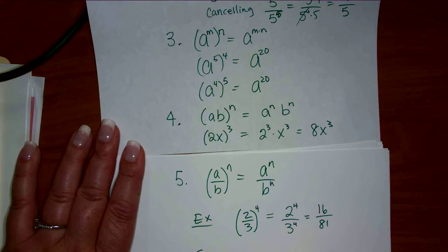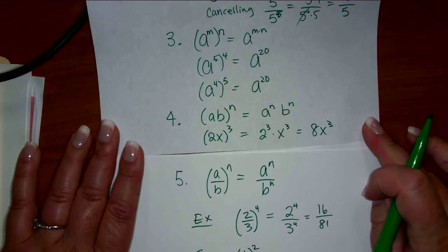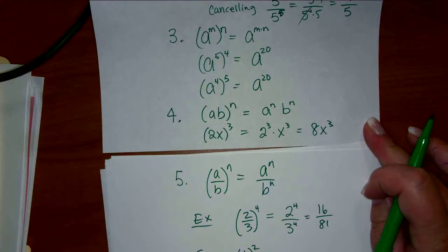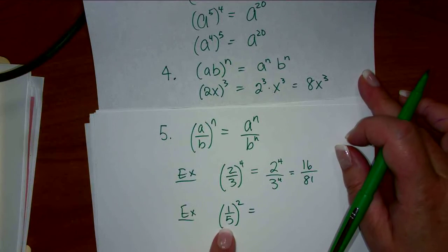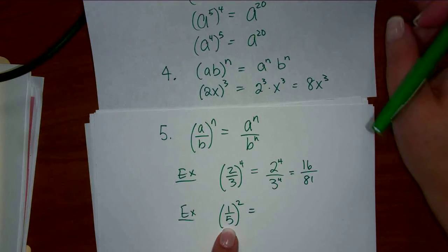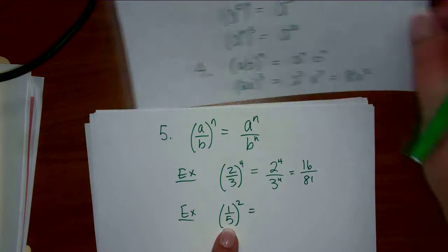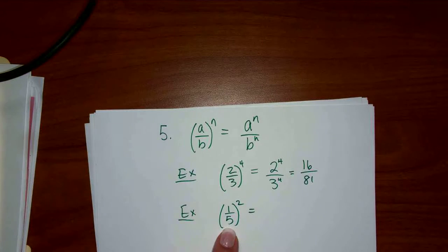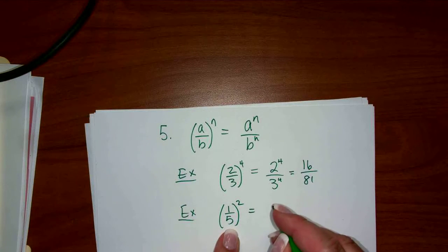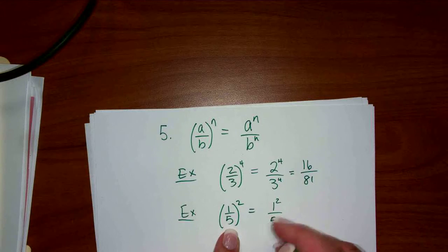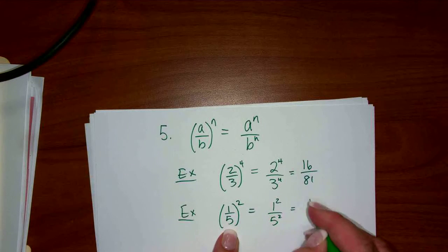So 2 thirds all to the 4th power would be 2 to the 4th over 3 to the 4th — 16 over 81. One place where people go wrong with this: if we had like 1 fifth squared, what's 1 squared? 1. So this is 1 squared over 5 squared, which is 1 over 25.